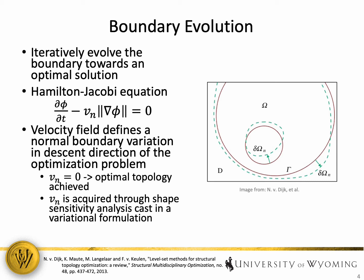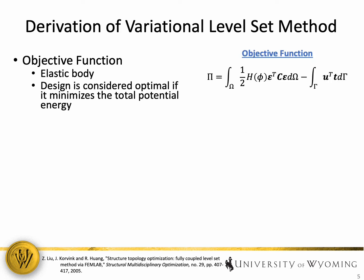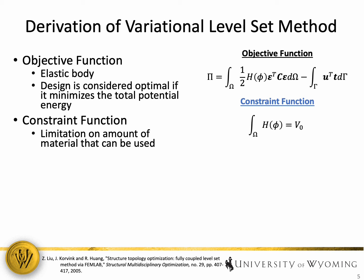Now to acquire the velocity field, a shape sensitivity analysis is generally performed and this can be cast in a variational formulation. The derivation of the variational level set method begins with the definition of the objective function. Now traditionally, an elastic body is assumed and we know from energy methods that a design is considered optimal if it minimizes the total potential energy. Therefore, the objective function is generally defined as the total potential energy. Next, a constraint function is traditionally introduced and this is generally defined to limit the amount of material that can be used within the design domain. So v naught would represent the material volume fraction that can be used within the design.